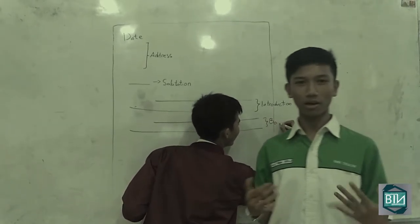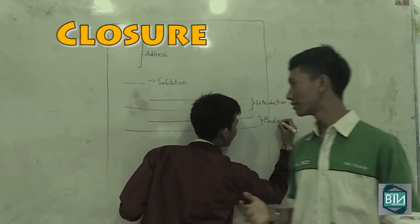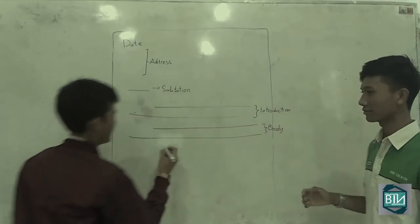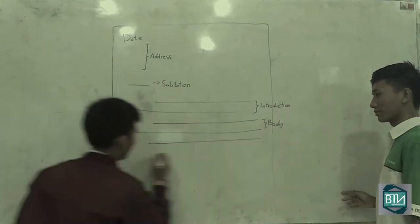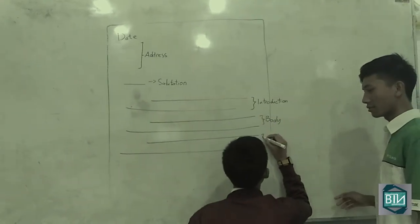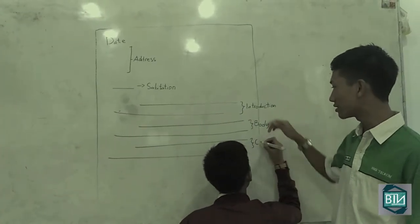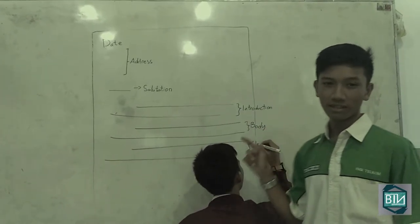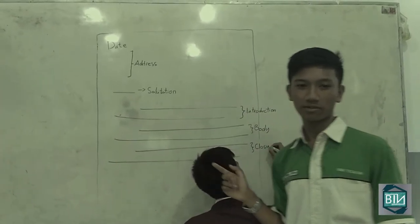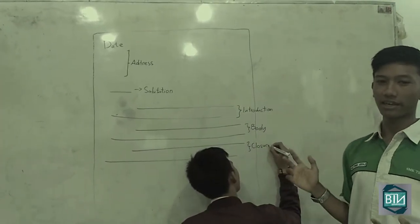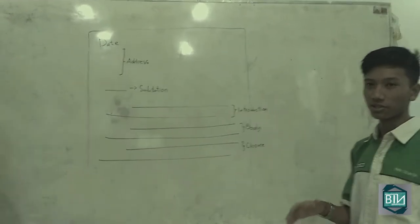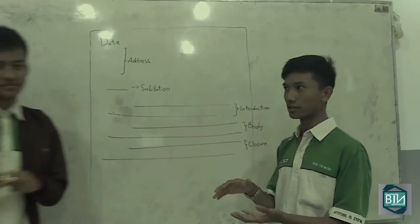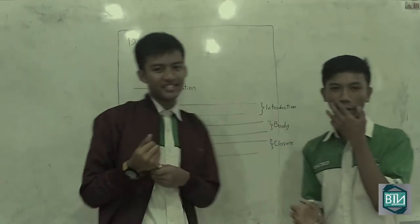Sixth: closure. This is the closing part. This is where the other part ends — the letter is coming to an end, so this is the finishing section.